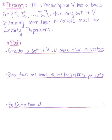We need to prove this. To get started, we consider a set in the vector space with more than n vectors. We define such a set as {u_1, u_2, ..., u_p} where p is greater than n. Since there are more vectors than entries per vector, the coordinate vectors for u must be linearly dependent in R^n by definition.